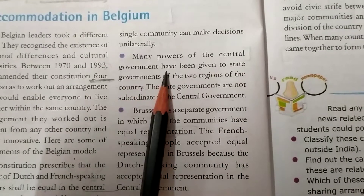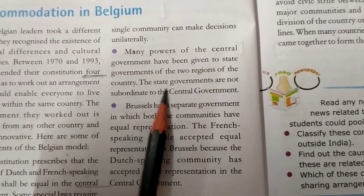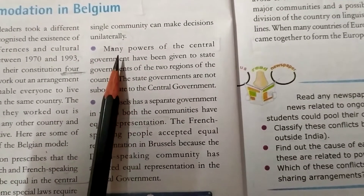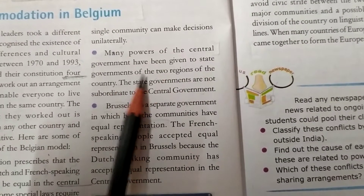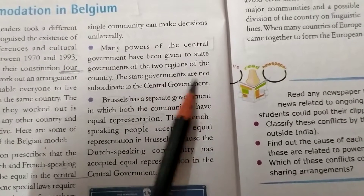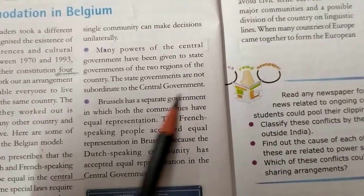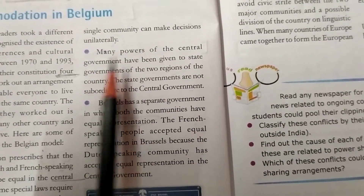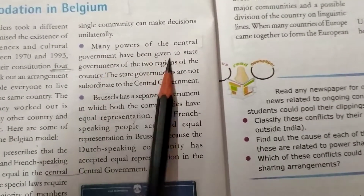Many powers of the central government have been given to the state governments of the two regions of the country — the French and the Dutch speaking. The state governments are not subordinate to the central government; these two states can individually run their own governments.